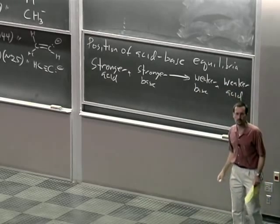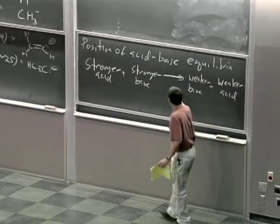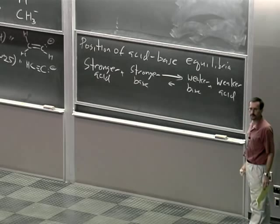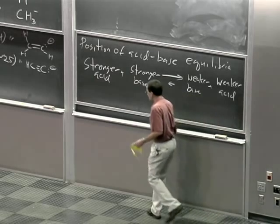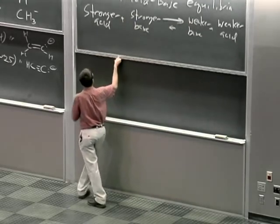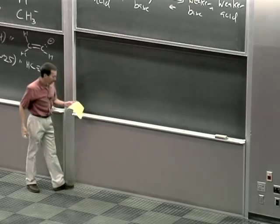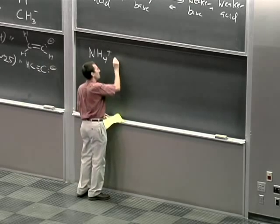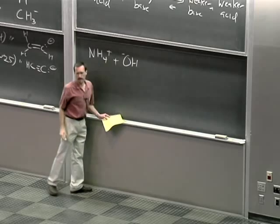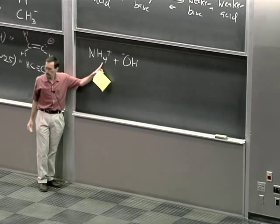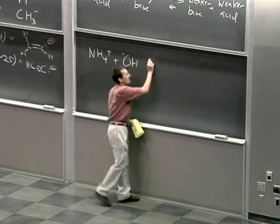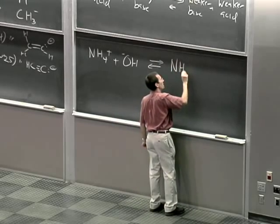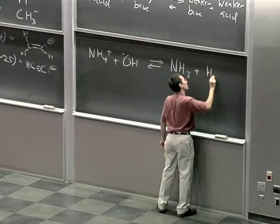If we want to think about this reaction as an equilibrium, I would draw my back arrow smaller. Let's take NH4+ and hydroxide anion, and look at the reaction where ammonium gives up a proton to hydroxide anion — an acid-base equilibrium — to generate ammonia plus water.